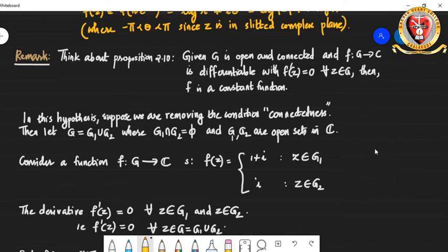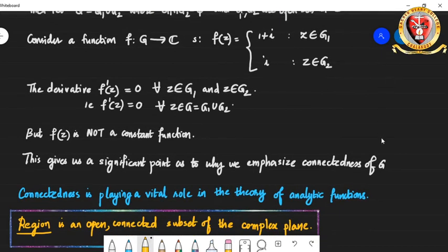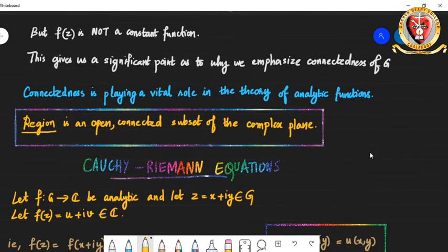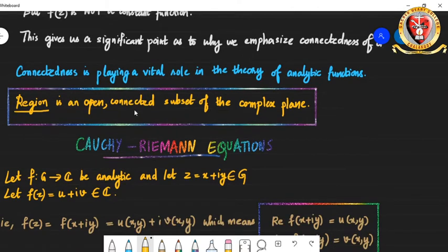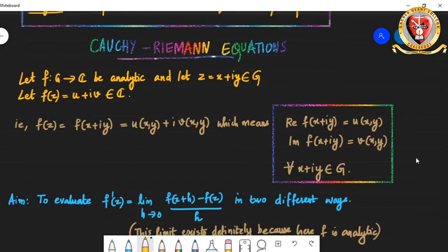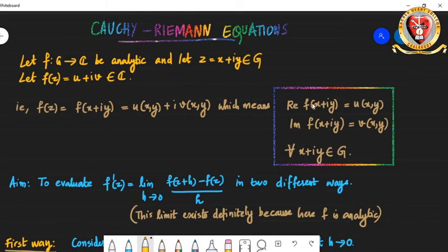This means connectedness is an important property when dealing with analytic functions. We are going to define a special subset of the complex plane called a region. A region is nothing but an open connected subset of the complex plane. The G we always take when dealing with analytic functions is called a region — open and connected. Now we will deal with the main session of today's lecture, which is the Cauchy-Riemann equations.